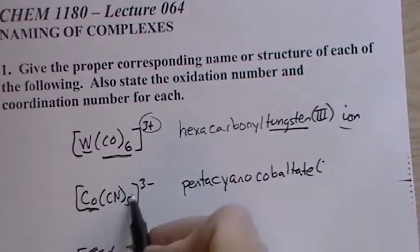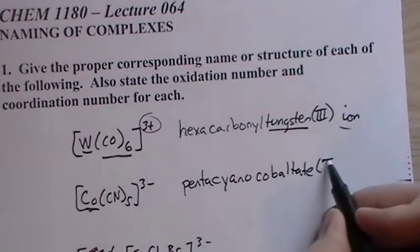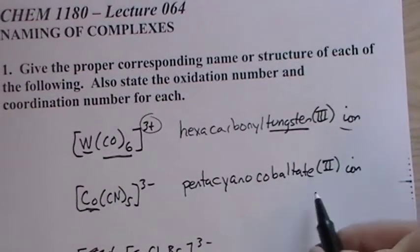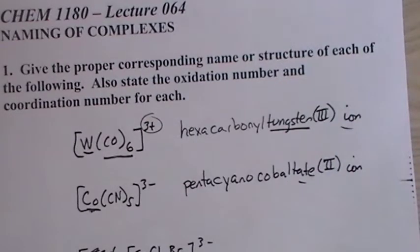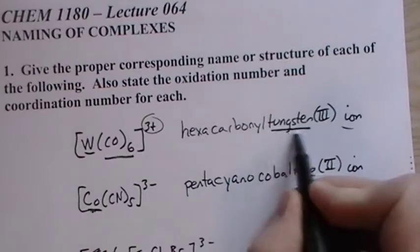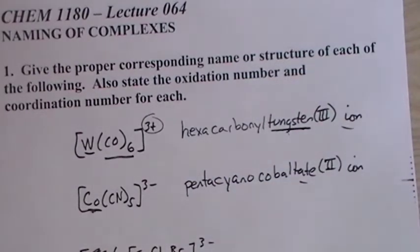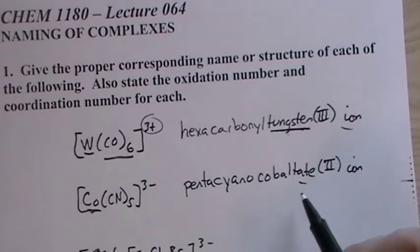But because it's part of an anion, we call it cobaltate. And this is minus five, so this would be cobaltate(II) ion. Now the cobalt has a plus two charge, but it's part of an anion, so we have to name it with the change, just like we do for sodium chloride. We leave sodium alone, so we leave the metal alone for the cation. But the chlorine changed to chloride, and here we change it to -ate.